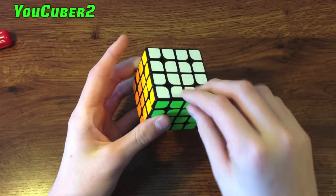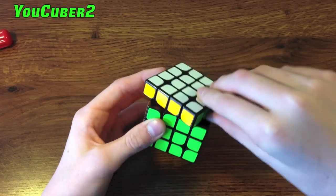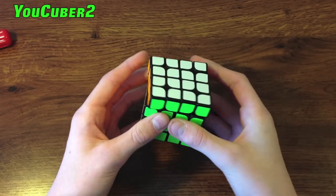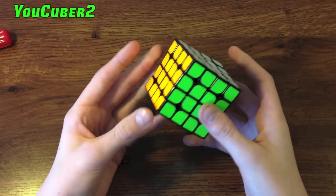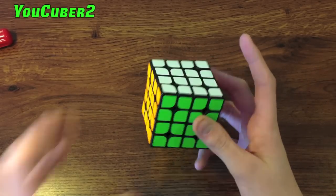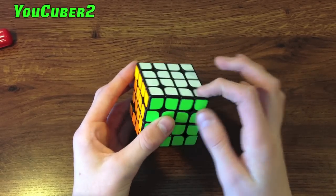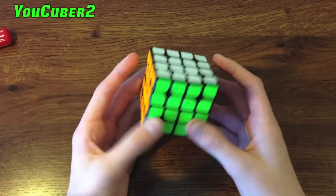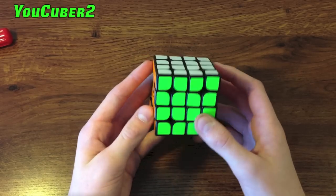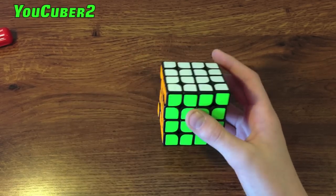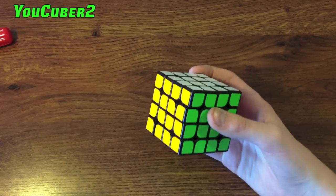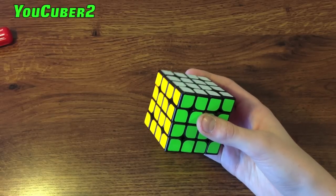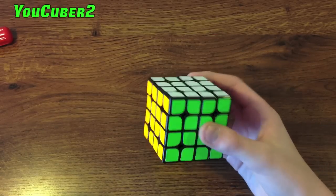Obviously OLL parity is when one edge is flipped and there is a really long algorithm to flip it, but sometimes it may catch you off guard. With this tutorial you are going to be using the last pair to predict whether you are going to have parity or not. I'm still not the best at this but I do know a little bit about it, so I'm going to try my best and just kind of go through it. So yeah let's get started.